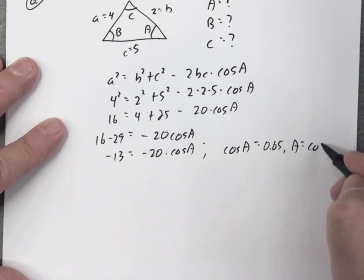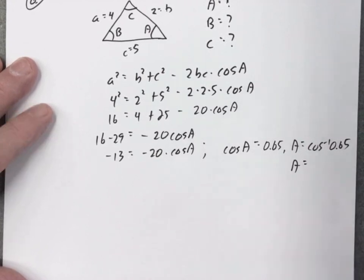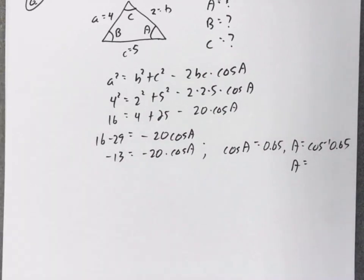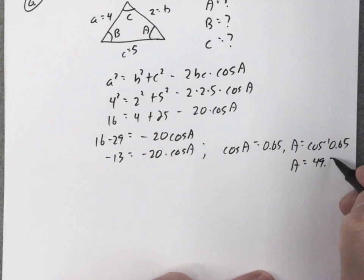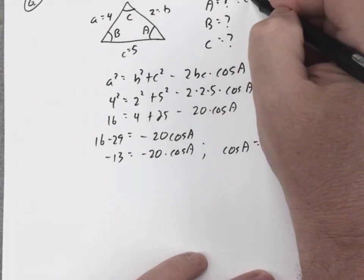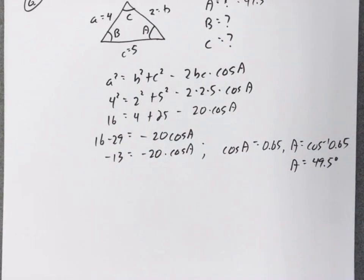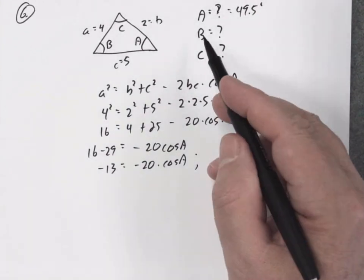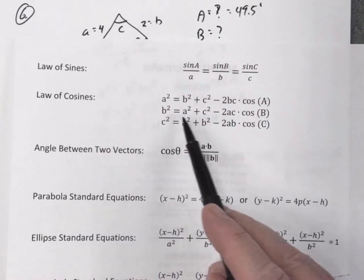Angle A is the inverse cosine of 0.65, which rounded to one decimal place is 49.5 degrees. Now let's find angle B using the second law of cosines formula: b squared equals a squared plus c squared minus two ac times the cosine of angle B.